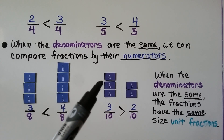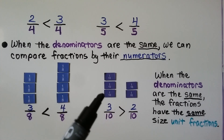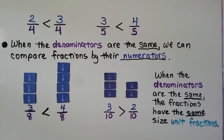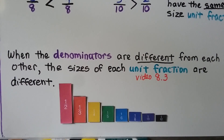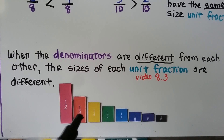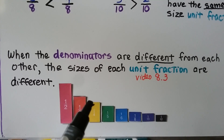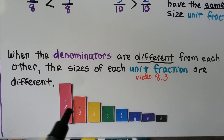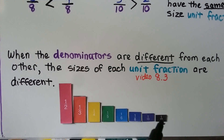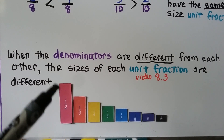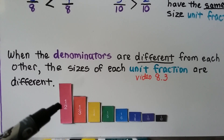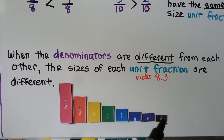Here we've got one-tenth unit fractions — three of them here and two of them here. So three-tenths is greater than two-tenths. We'll talk about this more in the next lesson. When the denominators are different from each other, the sizes of each unit fraction are different. Here we have a denominator of two, and here a denominator of three — see how the unit fractions are different sizes? Notice that the larger the denominator number becomes, the smaller the piece is. When we get to one-twelfth, it's a very tiny piece, but one-half has a much bigger piece because the whole was only cut into two parts, where this whole was cut into twelve parts.